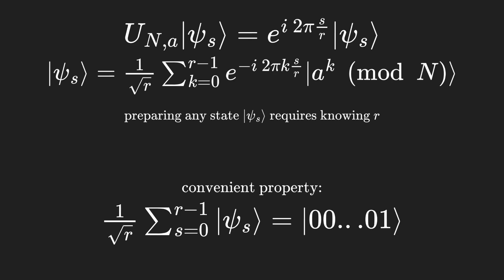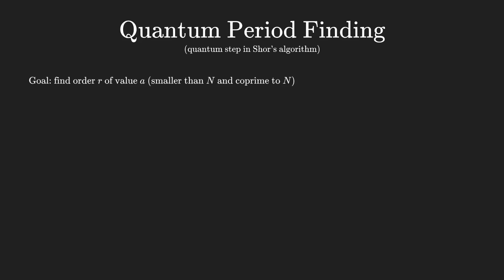This way, applying QPE with this superposition will result in probability spikes like the ones shown before, centered around the closest integers to the eigenvalues times the power-of-2 factor. This procedure to extract the order R for a chosen number A — the quantum step needed in Shor's algorithm — is known as quantum period finding. By the way, period and order are synonyms for the same property R.